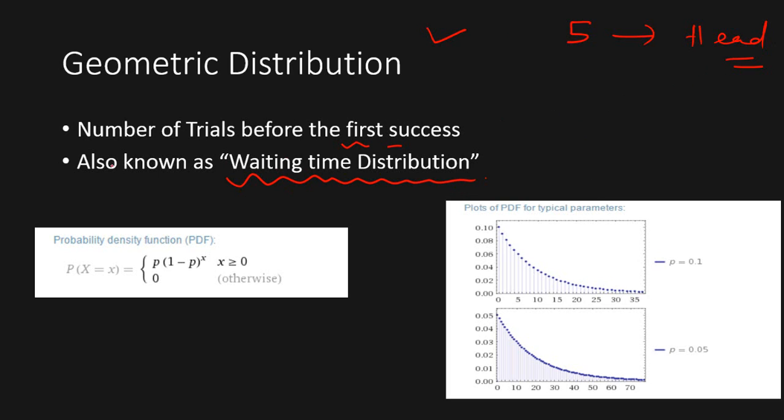The probability density function for the geometric distribution is based on the fact that we have to wait for x minus one times before we get success at the xth time. Or in other words, if we're getting success at x plus one time, we need to wait for x times.